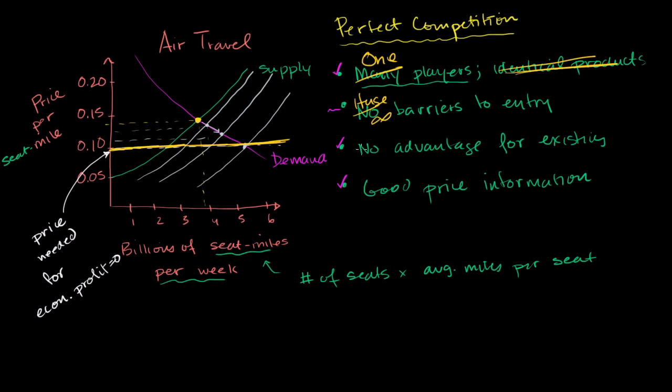So I'm going to the extreme case. And obviously, there is the ultimate advantage for the existing player. They are the only one that the government is allowing to participate. And price information, we don't really care about. There's only one price quote coming from one player. And when we do that, when we talk about one player as the only player in the market, we are not talking about perfect competition. We are then talking about a monopoly.